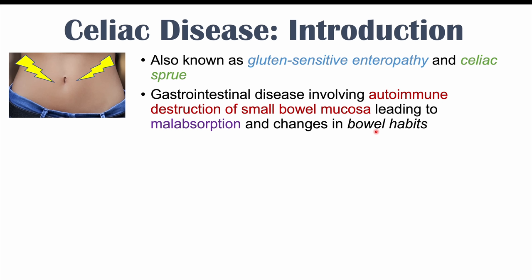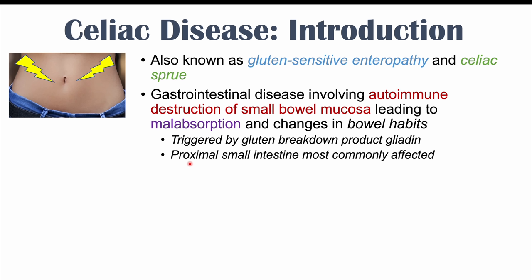This autoimmune destruction is triggered by the gluten breakdown product known as gliadin. So it's not gluten per se — it is the breakdown product of gluten that triggers the autoimmune attack. The proximal small intestine is the area most commonly affected, and this is the area involved in absorption of folate, iron, and calcium — all of which will be important when we discuss the signs and symptoms ahead.